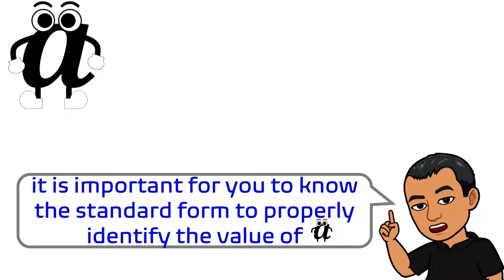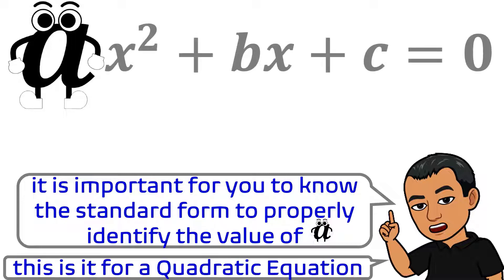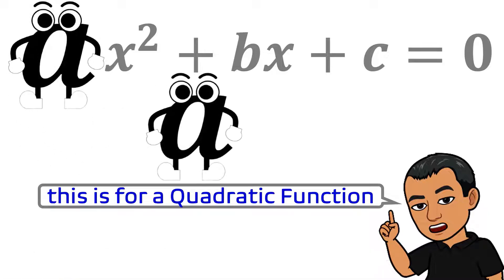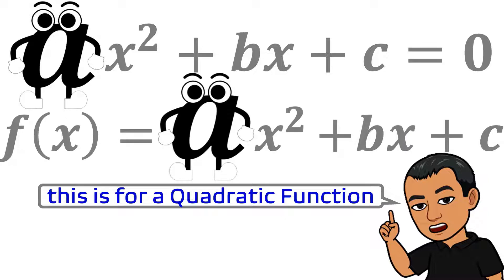It is important for you to know the standard form to properly identify the value of A. This is it for our quadratic equation: Ax-squared plus bx plus c equals zero. This is also for our quadratic function: the function of x equals Ax-squared plus bx plus c.